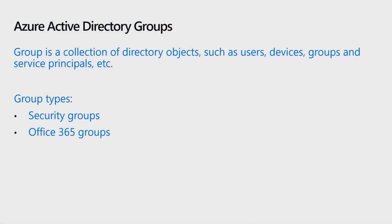A group, as suggested by its name, is a collection of directory objects, such as users, devices, groups, and other service principles. Organizations use groups for collaboration and securing access.